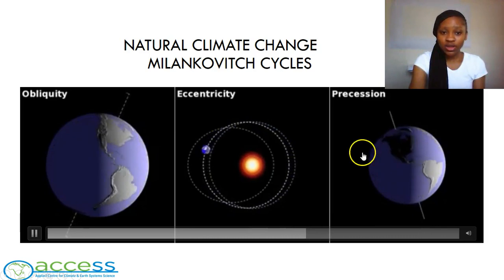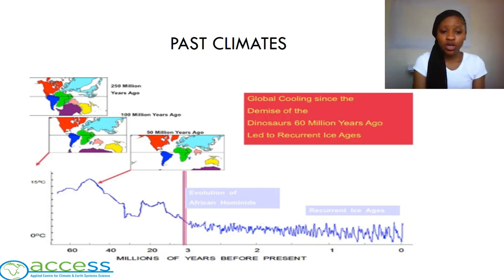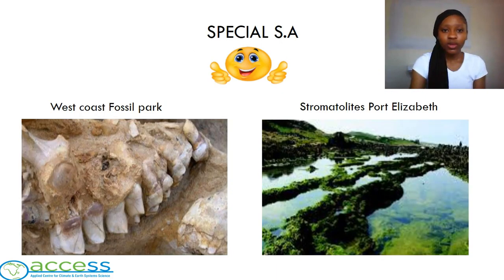We can see that all three cycles are occurring simultaneously. We now know that the fluctuation occurring in the second part of the graph — from 3 million years to the current time — is because of the Milankovitch cycles. What we still don't know is why the Earth's temperatures in the first part of the graph, from 3 million to 60 million years ago, were much warmer. We are now going to look at why South Africa is special in terms of paleoclimate.